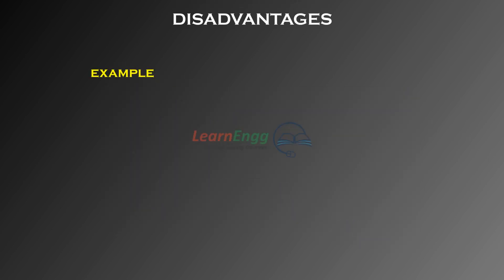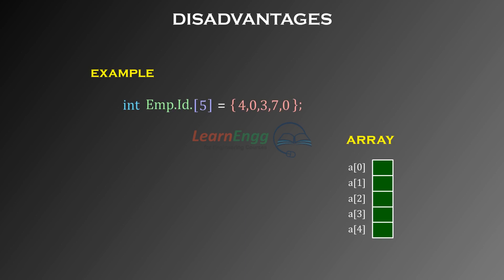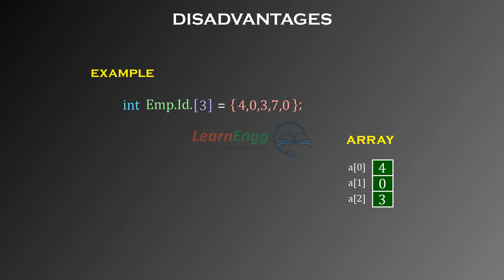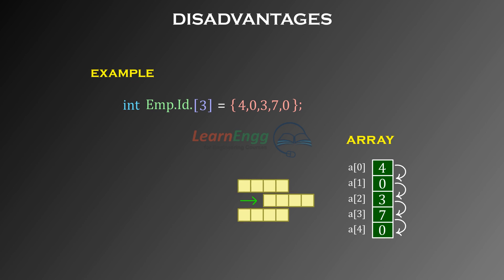Disadvantages: We must know in advance how many elements are to be stored in the array. Array is a static structure, meaning it is of fixed size — the memory allocated to an array cannot be increased or reduced. If we allocate more memory than required, memory space will be wasted; if we allocate less, it will create problems. Since array elements are stored in consecutive memory locations, insertions and deletions are very difficult and time-consuming.